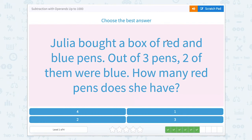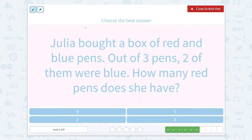Julia bought a box of red and blue pens. Out of three pens, two of them were blue. How many red pens does she have? We know that Julia bought three pens. Two of them were blue. So three minus two, and that'll leave red. That means there's just one red pen.